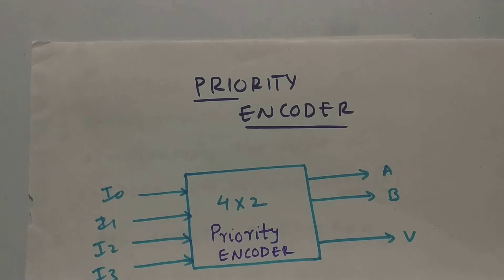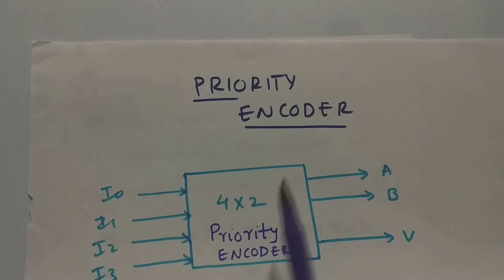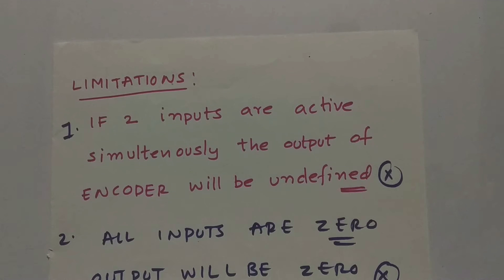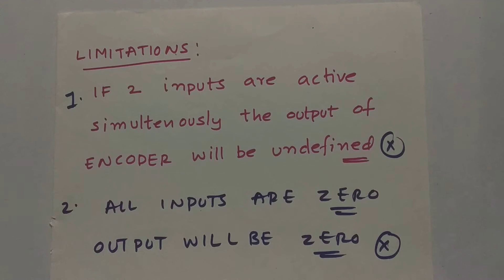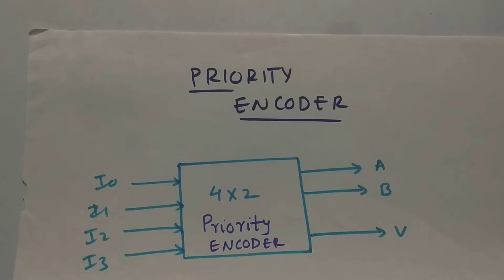Welcome back. Today's topic is the priority encoder. In the previous video we discussed encoders, their advantages and limitations. The limitation is: if two inputs are active at the same time, the output of the encoder will be undefined. Also, if all inputs are zero the output will be zero, which is undesirable. That's why we add a valid bit or void bit in the priority encoder.